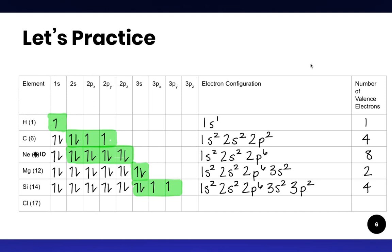And finally, we have chlorine with 17 electrons. One, two, three, four, five, six, seven, eight, nine, ten, eleven, twelve, thirteen, fourteen, fifteen, sixteen, seventeen. Here's our configuration. Our highest occupied energy level is level three, and it has seven electrons in it. So chlorine has seven valence electrons.